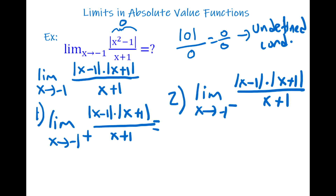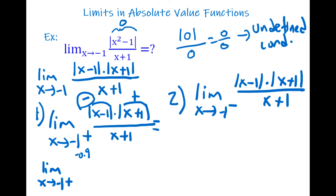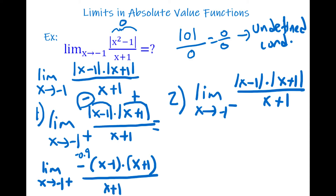With a value like −0.9: (x − 1) is negative, and (x + 1) is positive. To make the absolute value positive, multiply the first term by a negative. So we get: −(x − 1) · (x + 1) / (x + 1). There's no absolute value sign now, so simplify — the (x + 1) terms cancel.